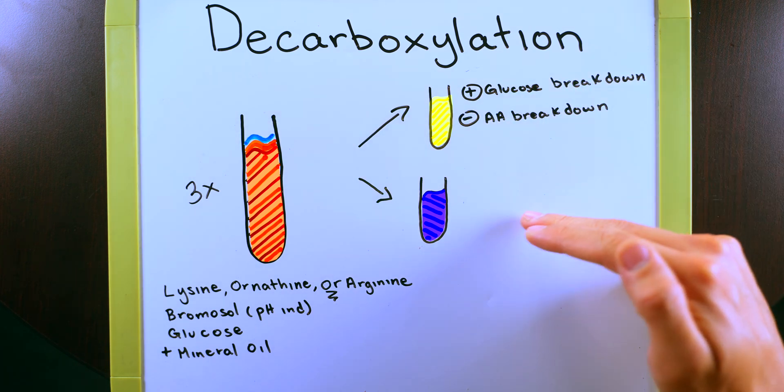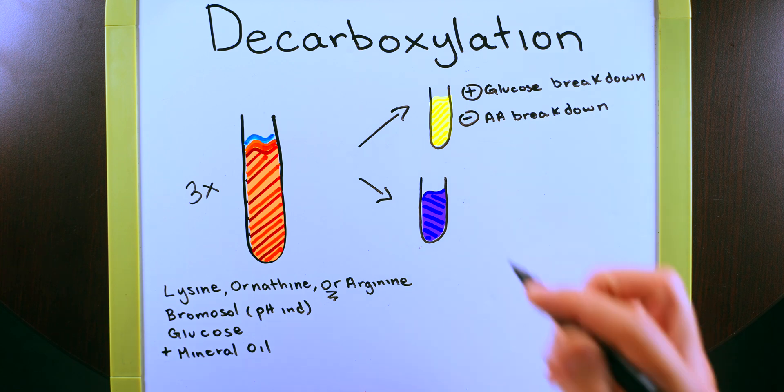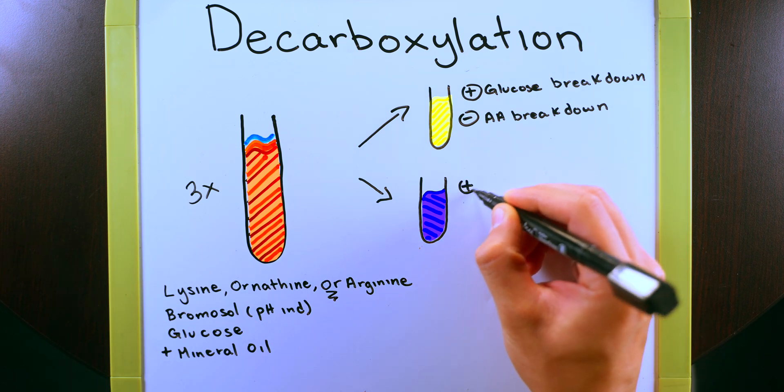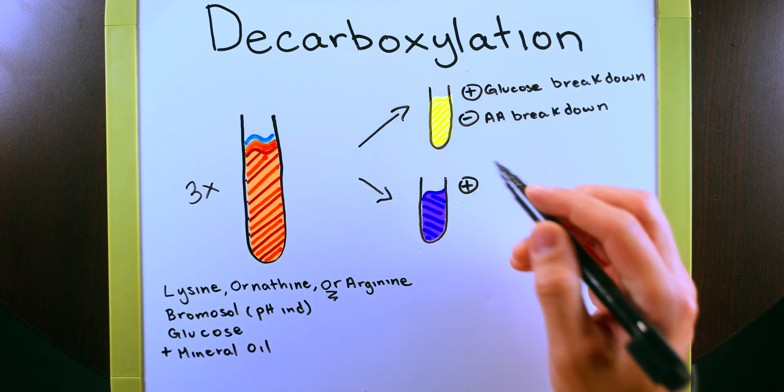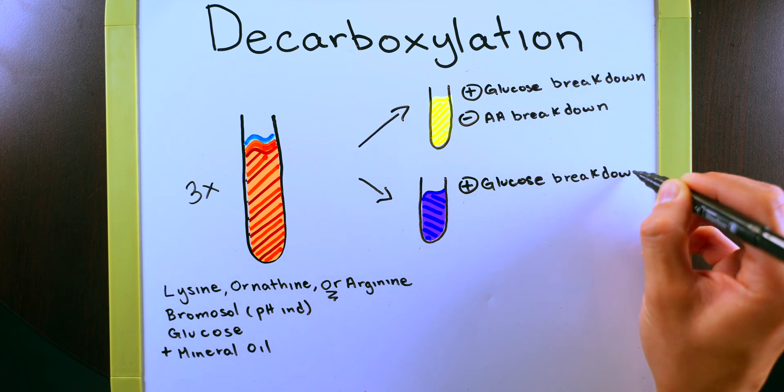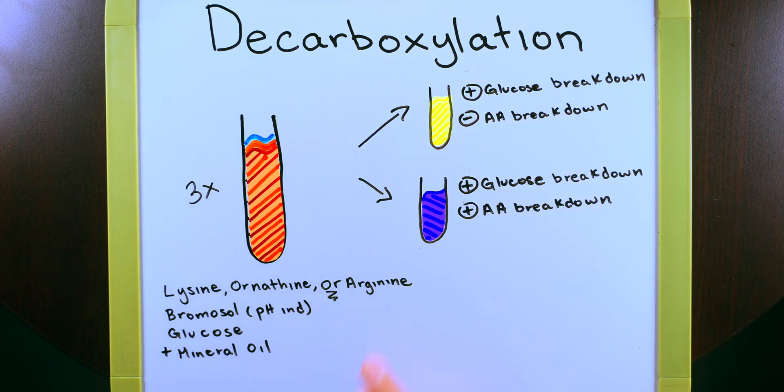On the contrary, if you have a purple color change, that means that the glucose was broken down as well as the corresponding amino acid. And this color change from this orange or brown color here to a purple color indicates to us that the bacteria that we inoculated in here has the operon that will produce the enzymes in order to break down lysine or ornithine or arginine, whichever test tube this is.